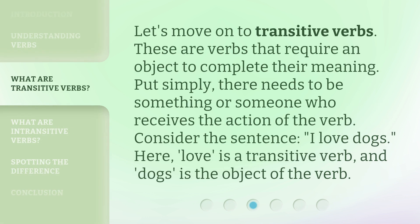Let's move on to transitive verbs. These are verbs that require an object to complete their meaning. Put simply, there needs to be something or someone who receives the action of the verb. Consider the sentence 'I love dogs.' Here, 'love' is a transitive verb, and 'dogs' is the object of the verb.